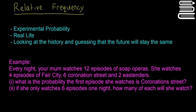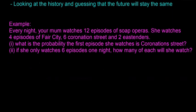Every night your mum watches 12 episodes of soap operas. She watches 4 episodes of Fair City, 6 episodes of Carnation Street, and 2 episodes of East Enders. The first question is: what is the probability the first episode she watches is Carnation Street? Question 2: if she only watches 6 episodes one night, how many of each will she watch? We're going to use experimental probability to figure this out.